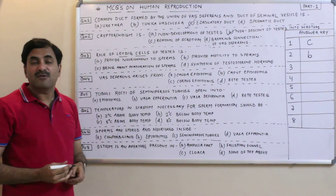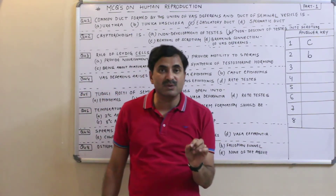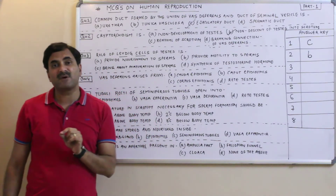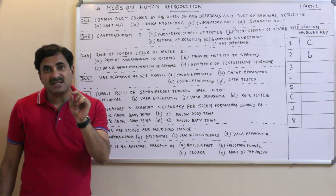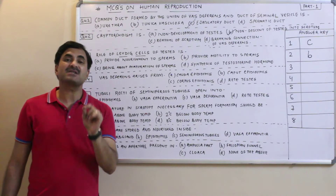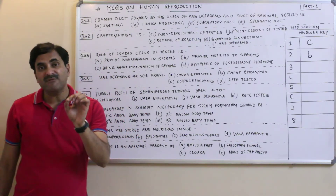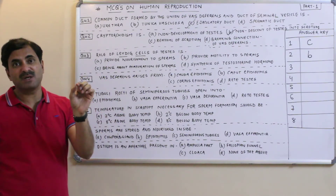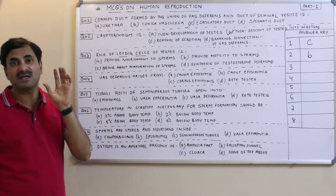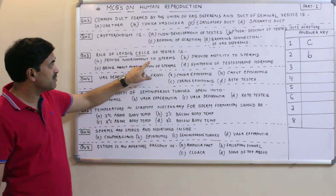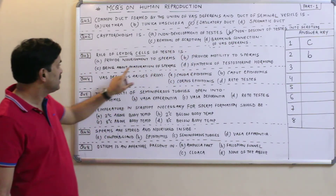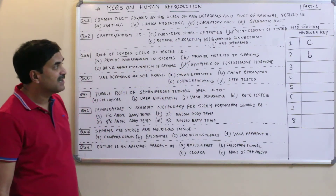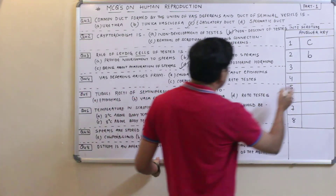Question three: Role of Leydig cells. In between the seminiferous tubules, certain interstitial spaces are found, and in those spaces special cells are found called interstitial cells. These were discovered by Leydig and are therefore called Leydig cells. The prime function of Leydig cells is to release the male sex hormone testosterone, which is responsible for secondary sexual characteristics in males. So the answer to question three is D — synthesis of testosterone hormone.